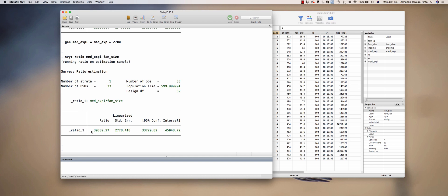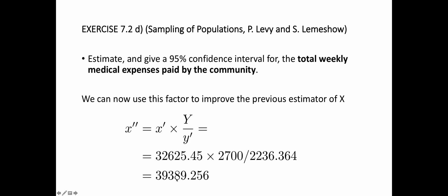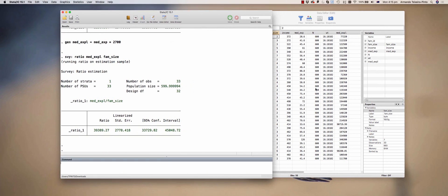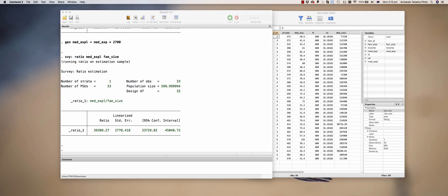This should give exactly the same quantity that we have obtained in the calculation. 39,389.27. Well, there's a small difference, but it's just due to rounding. Stata is using more precise values. I hope this helped explaining the exercise. Thank you.